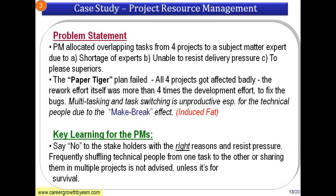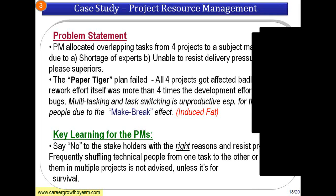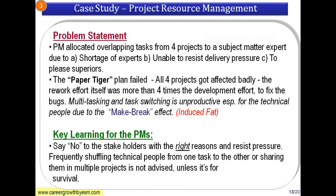So in this particular case, the paper tiger plan has failed because all four projects had different tasks allocated to this particular architect or subject matter expert. It resulted in big rework. The key learning here is that multitasking and task switching is very unproductive, especially for technical people. This is a kind of waste introduced by project managers only, and it should be avoided. People think that since he is a great guy, let me put him on ten tasks — but all ten tasks will get screwed up.